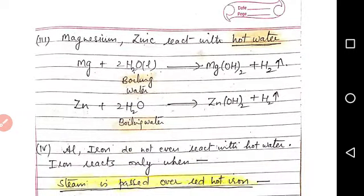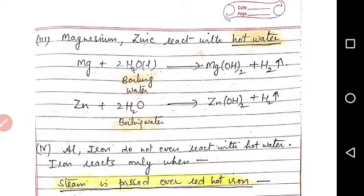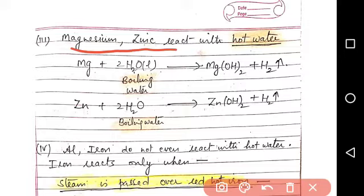Third type of reactions were magnesium and zinc. They react with hot water. Hot water is required for the reaction. Mg + 2H2O gives Mg(OH)2 + H2. Similarly, zinc also reacts with boiling water. Zn + H2O gives Zn(OH)2 + H2.